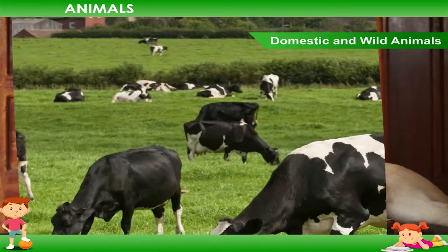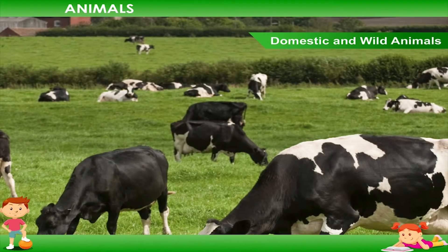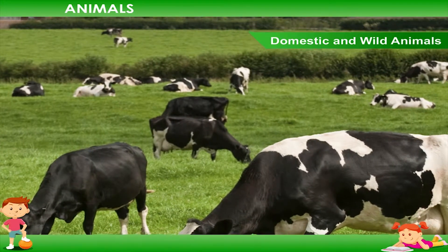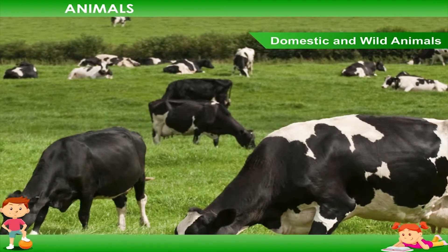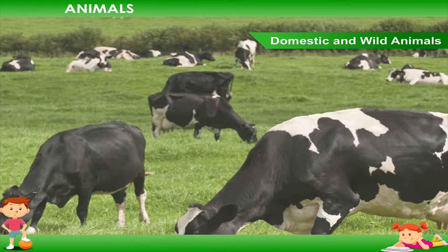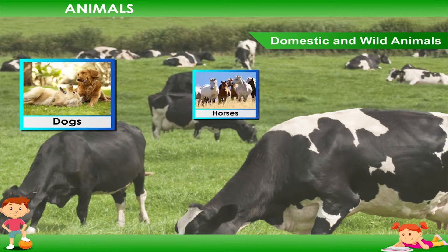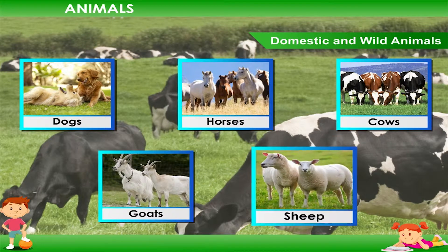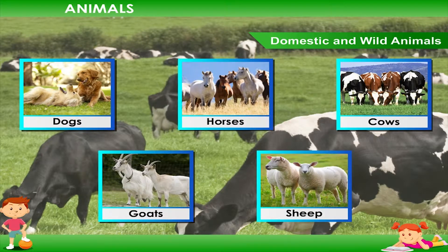Some of these animals live with us in our homes, while some live on farms. Animals such as dogs, horses, cows, goats, sheep etc. which live on farms are known as domestic animals.